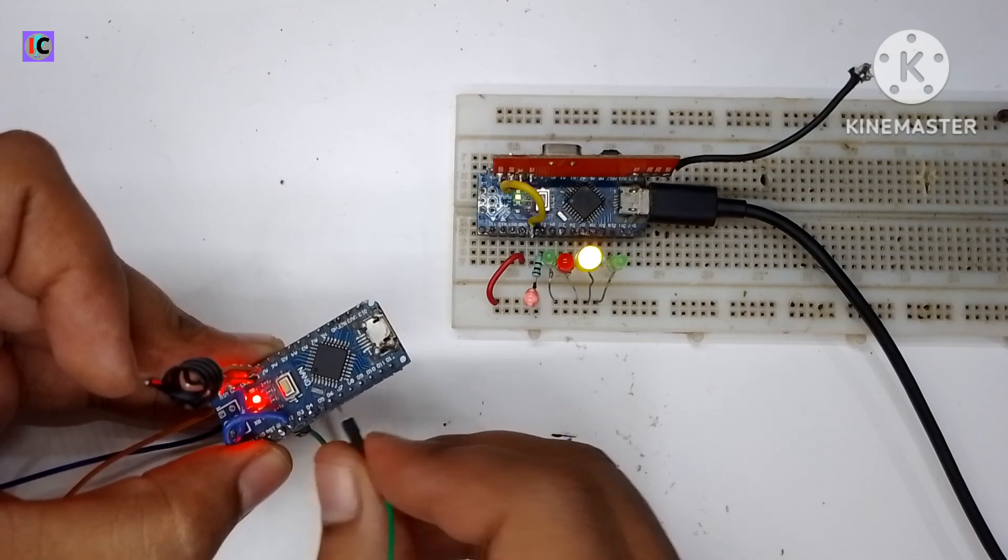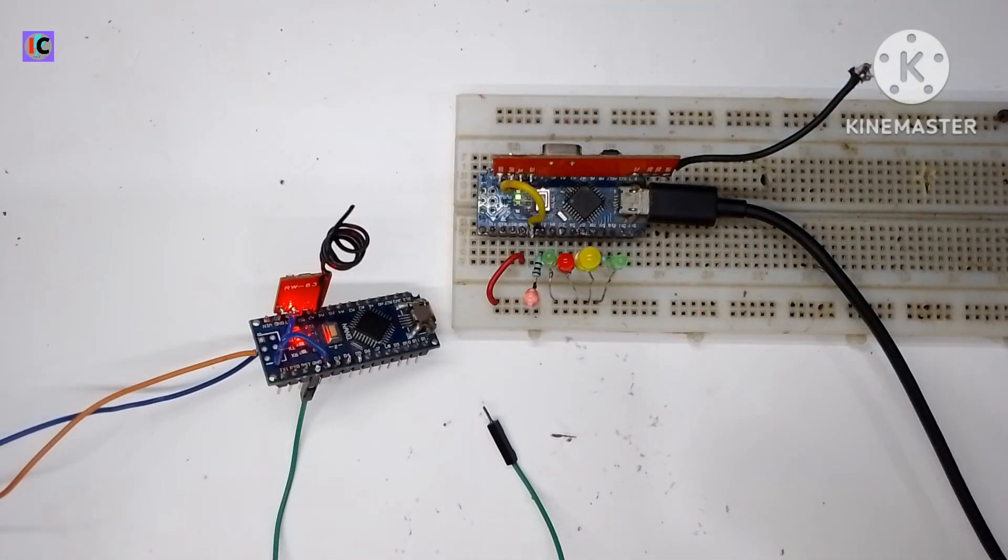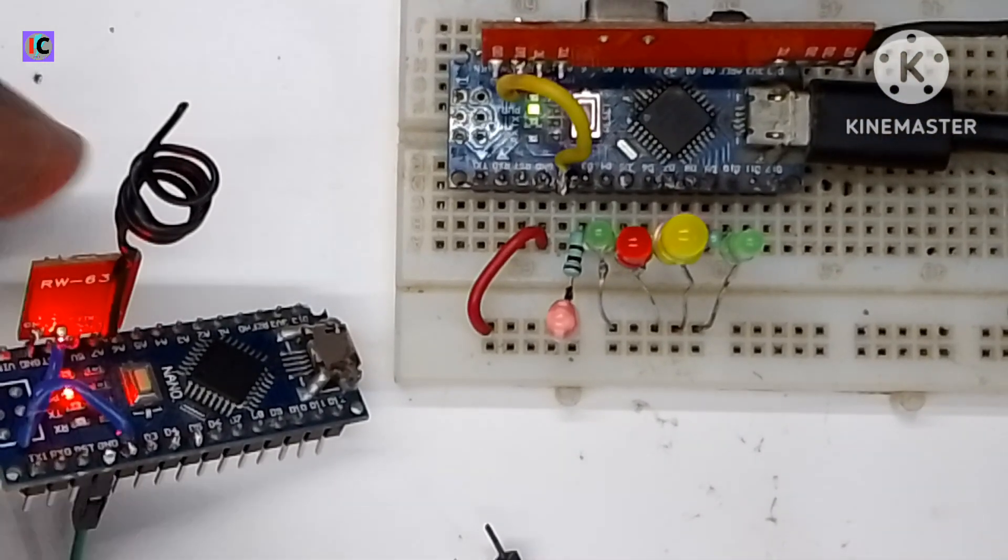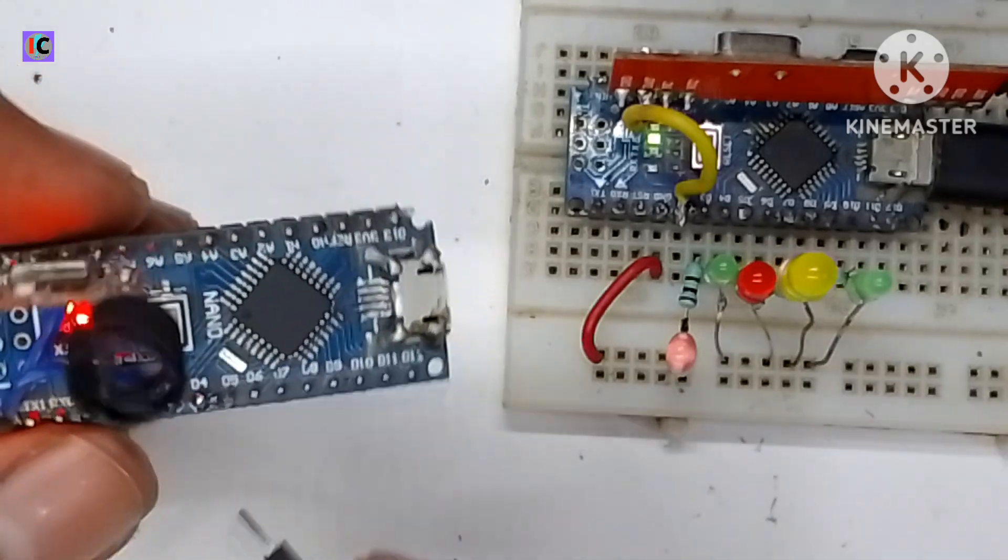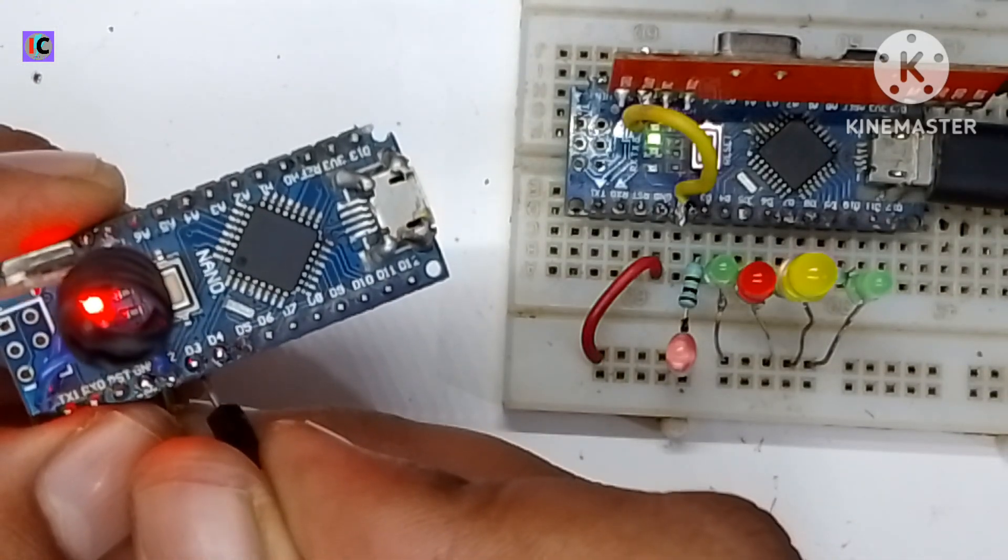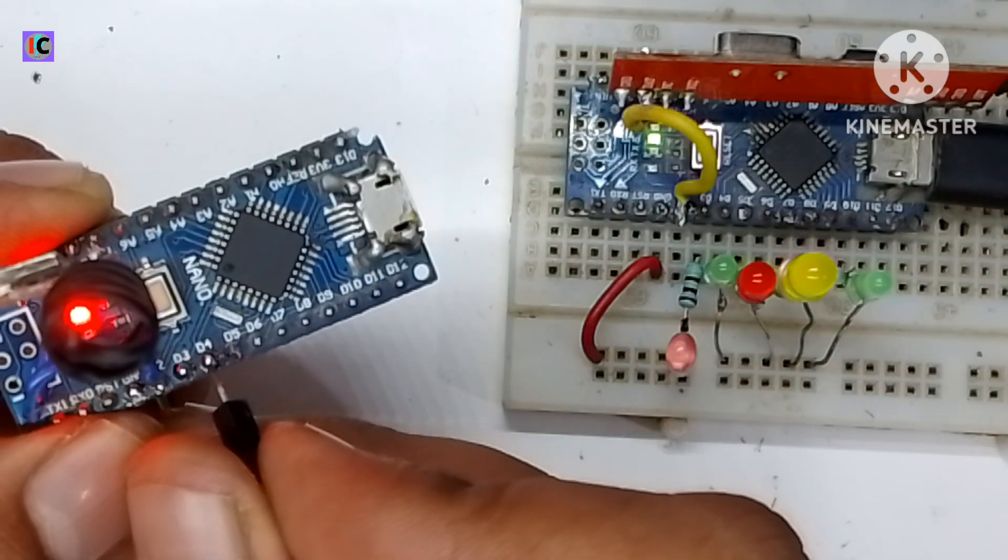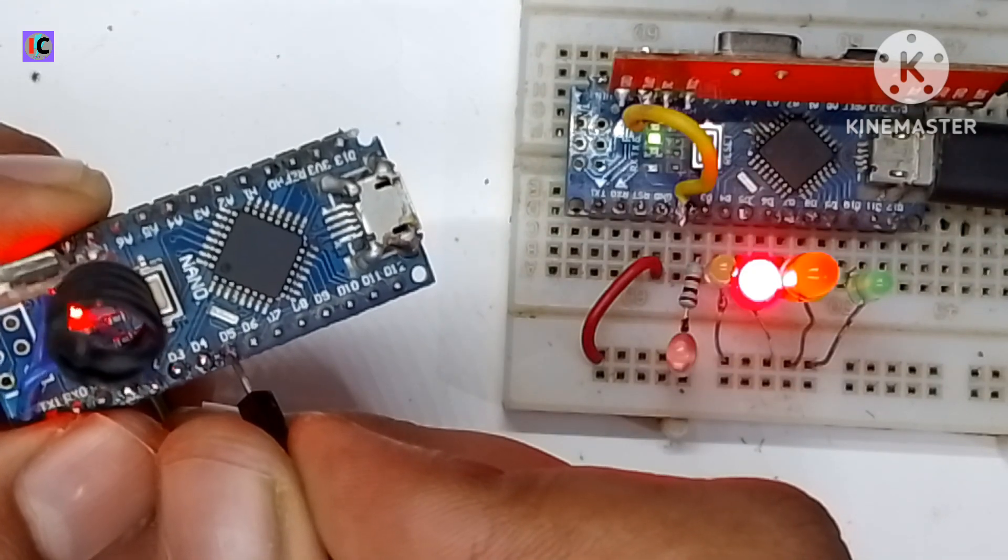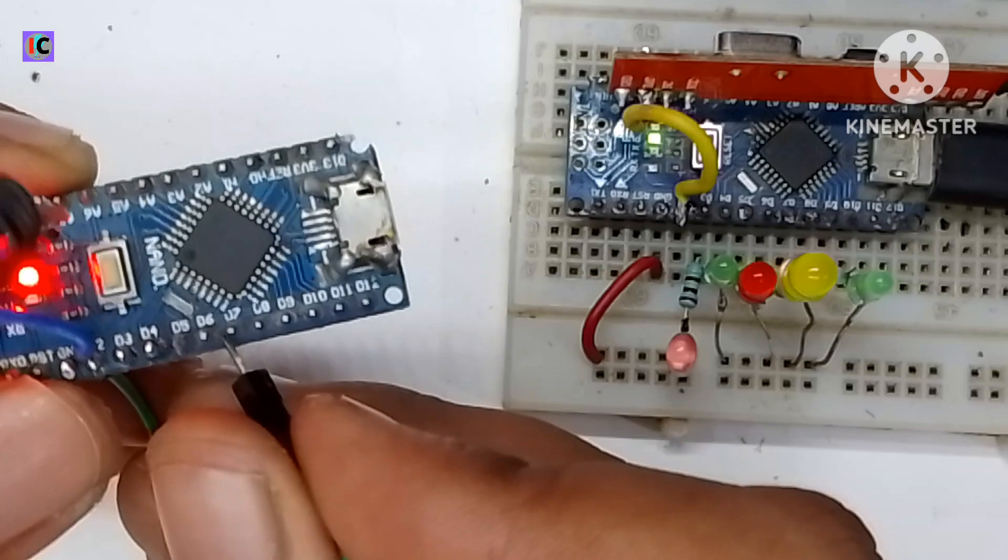This is the way this transmitter receiver is working together. The code for this transmitter receiver will be provided in the description. You can also watch the response time - it's suitable for making a simple RC car or robot.